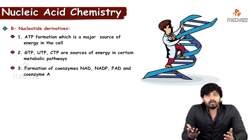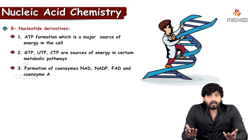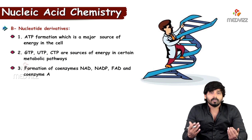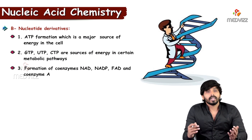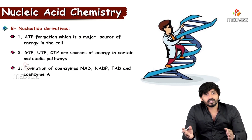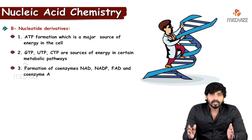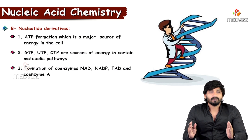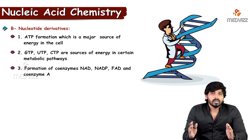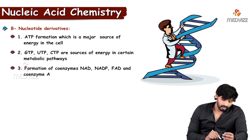ATP is the chief currency of the cell. Energy is obtained with the help of ATP. Whatever food we eat is converted from complex to simple forms; glucose enters glycolysis, then the TCA cycle, and finally reducing substances enter the electron transport chain where ATP is produced by oxidative phosphorylation.